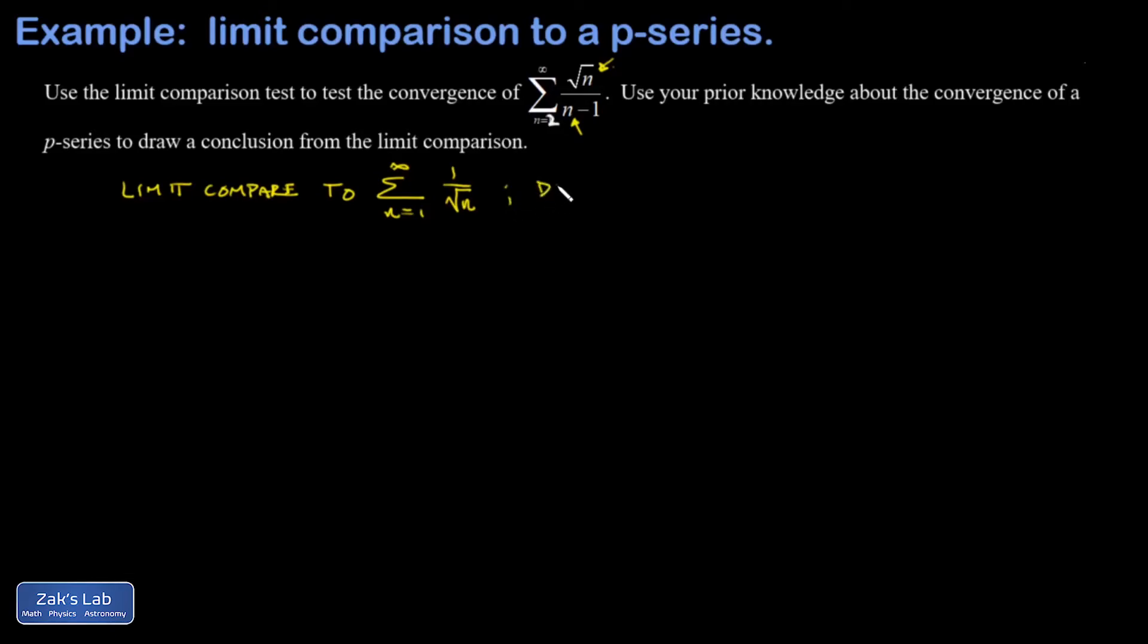We have prior knowledge that this is a divergent p-series which we've previously shown by using the integral test. What a p-series means is that it's one over n to a power—in this case that's a one half—and if that power is less than or equal to one, we know it's a divergent series.